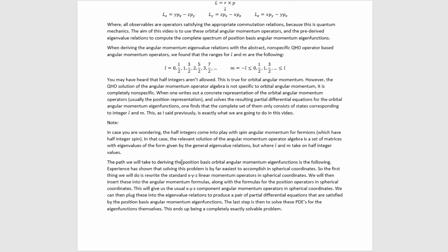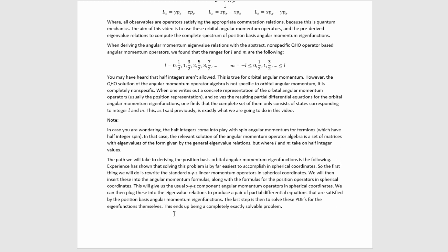The path we will take to derive the position basis orbital angular momentum eigenfunctions is the following. Experience has shown that solving this problem is by far easiest in spherical coordinates, so the first thing we will do is rewrite the standard XYZ linear momentum operators in spherical coordinates. We will then insert these into the angular momentum formulas along with the formulas for the position operators in spherical coordinates. This will give us the XYZ component angular momentum operators in spherical coordinates, which we plug into the eigenvalue relations to produce partial differential equations. The last step is to solve these PDEs for the eigenfunctions themselves.